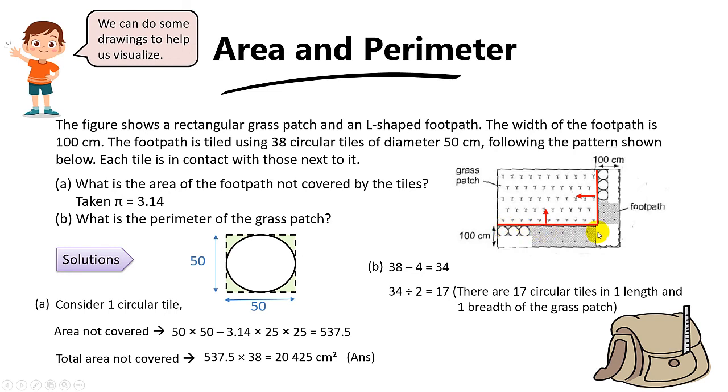In other words, the total tiles here plus the total tiles over here is 17 tiles. But we do not know exactly how many tiles are in here and here - it can be 10 and 7, or 9 and 8. We do not know exactly, but we do know that the total is 17 tiles. Since each tile diameter is 50 cm, 17 tiles will be 17 times 50. That will be the total length of 1 length plus 1 breadth. Does it make sense? Because 1 tile diameter is 50, so 17 times 50 will give us the total length of 1 length plus 1 breadth.